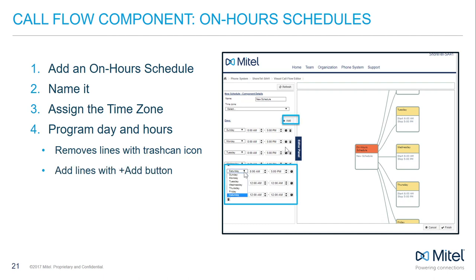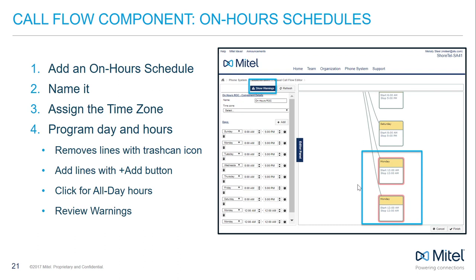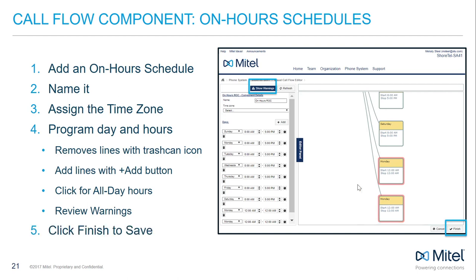You can add more lines to cover more days or even multiple instances on a single day with the Add button, allowing you to split hours such as an office-wide lunch hour. Click the All Day button to automatically set the hours from 12 a.m. to 11:59. You can click Show Warnings to see if there are overlapping or duplicate schedule issues. Click Finish to save.